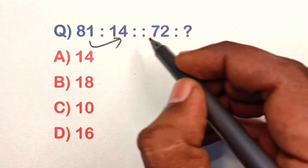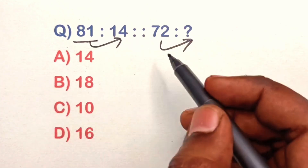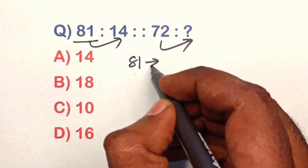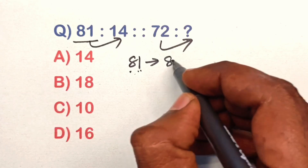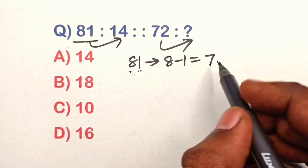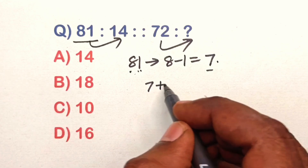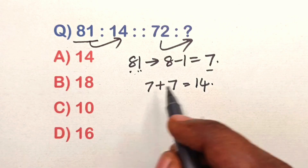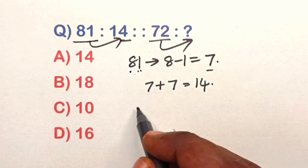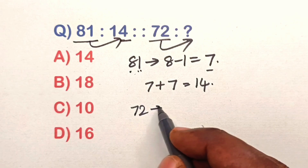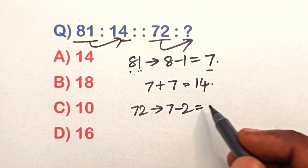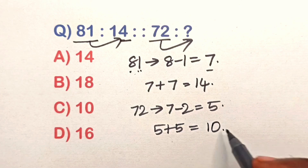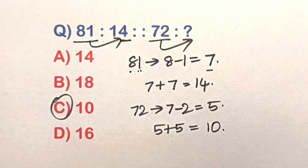Find the relation in this analogy question. Take 81 — subtract the individual digits: 8 minus 1 equals 7. Then write 7 twice and add them: 7 plus 7 is 14. Take 72 — subtract individual digits: 7 minus 2 equals 5. Double the number: 5 plus 5 is 10. Option C is the correct answer.